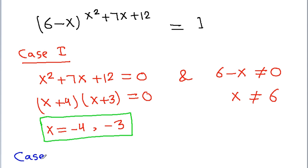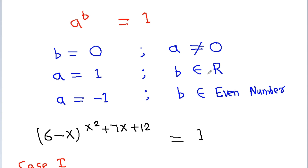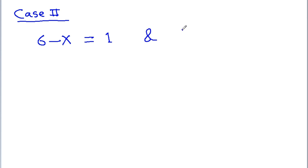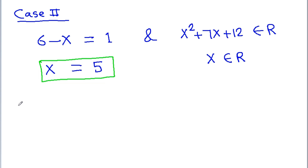Case 2: a = 1, meaning 6 - x = 1, and b = x² + 7x + 12 belongs to any real number. Since x² + 7x + 12 is a real number for any real value of x, we just need 6 - x = 1, which gives x = 5. So from Case 2, x = 5.